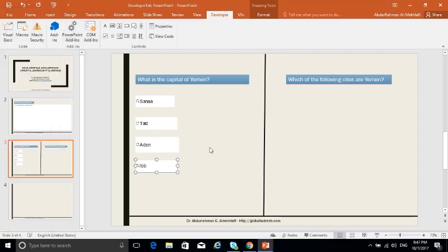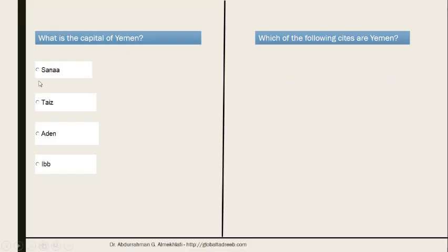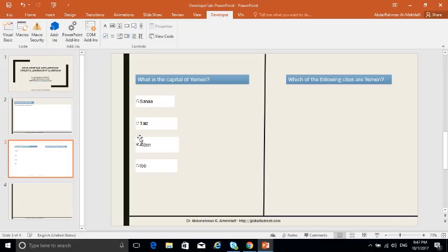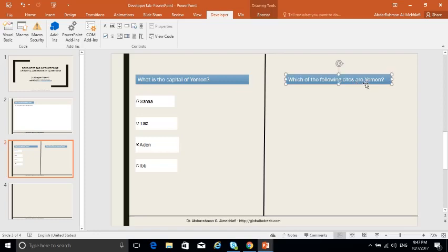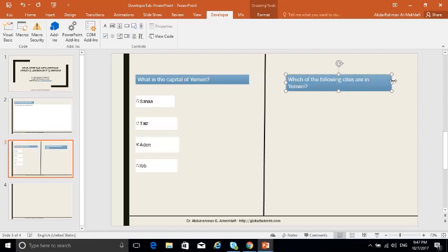With radio buttons, the student can select Sanaa or Aden, but only one choice is allowed at a time. If the question asks 'Which of the following cities are in Yemen?' — meaning multiple answers are possible — then you would use the checkbox instead.